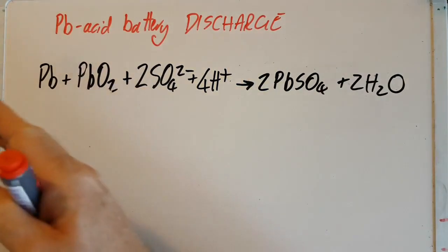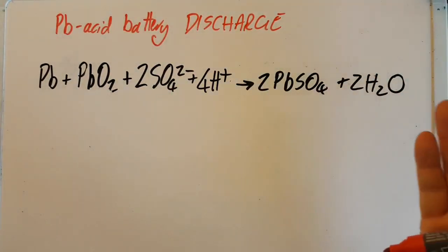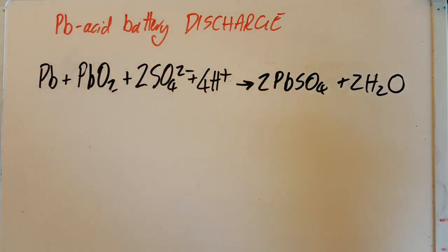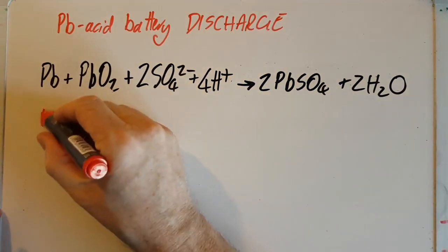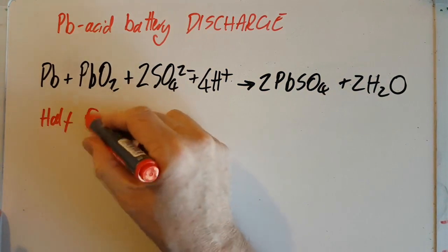All righty, so the IB says you have to be familiar with these equations, which doesn't mean you have to learn them but you have to manipulate them. So what could they ask you here? Well, I'm thinking maybe they could ask you to work out the two half equations. So let's do that.